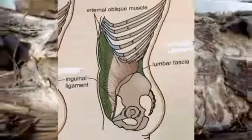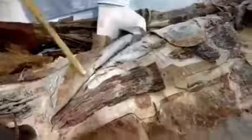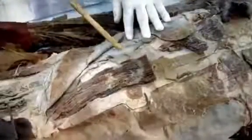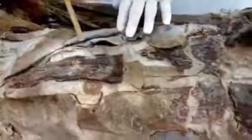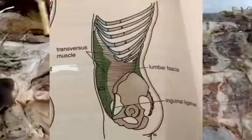The internal oblique has its origin from the thoracolumbar fascia, the inguinal ligament, and the intermediate lip of the iliac crest. The insertion of the internal oblique is into the costal margin and the linea alba. The transversus abdominis also originates from the thoracolumbar fascia, the iliac crest, and the inguinal ligament, and it also inserts into the linea alba.